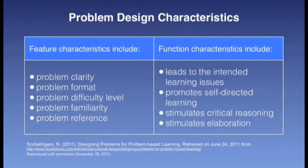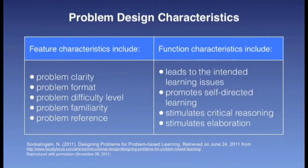The topic for this final video clip will be a quick look at some of the criticisms leveled at PBL and related issues. Sokalingam has identified appropriate problem design as the single most important feature required for problem-based learning. In a study of the literature, Sokalingam lists 11 characteristics which can be used to measure problem effectiveness, organized into two categories: feature design element characteristics and function desired outcome characteristics, as shown on the slide.